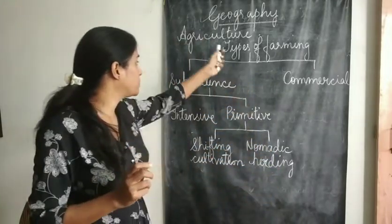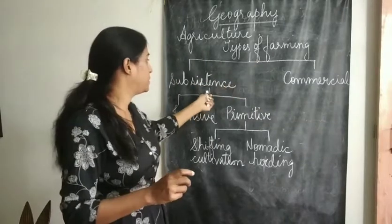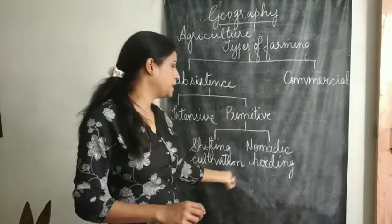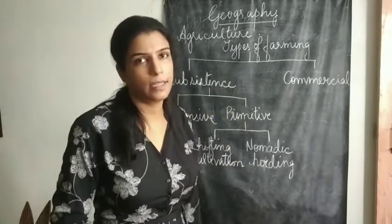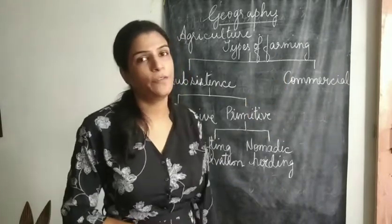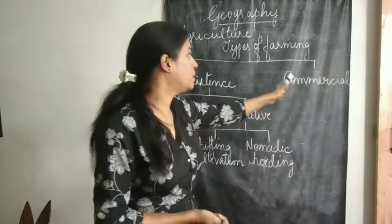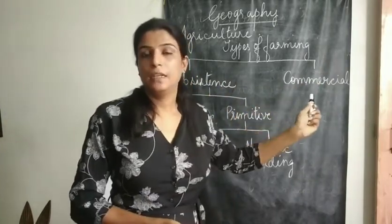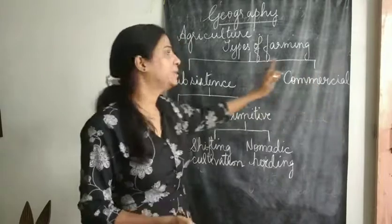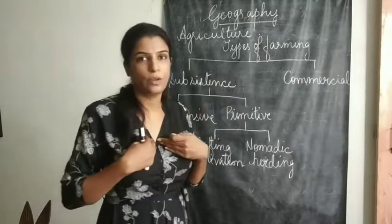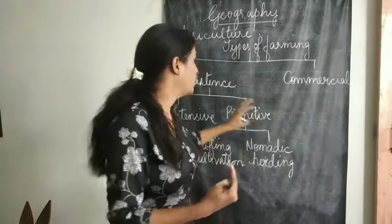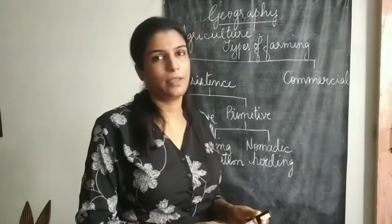So this is the synopsis of the types of farming. We finished subsistence farming — intensive subsistence and primitive subsistence, with shifting cultivation and nomadic herding under primitive. In the next lecture, commercial farming will be covered, which involves high yield of produce. In commercial you sell, whereas in subsistence you grow it for yourself and your family to survive throughout the year. That's all for today's lecture.